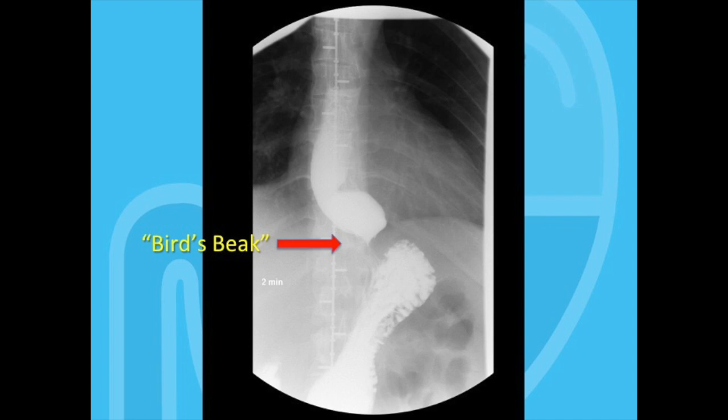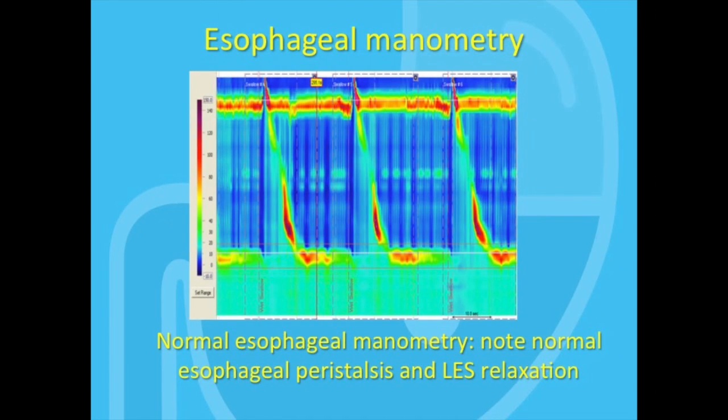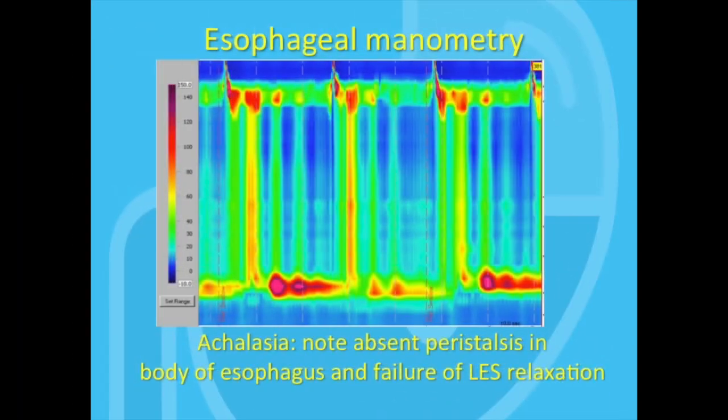Does a gastroscopy clinch the diagnosis of achalasia? A gastroscopy is necessary, but not sufficient to confirm a diagnosis of achalasia. The definitive test is an esophageal manometry study, which can measure whether there is any peristalsis in the esophagus and whether the lower esophageal sphincter opens with swallows.